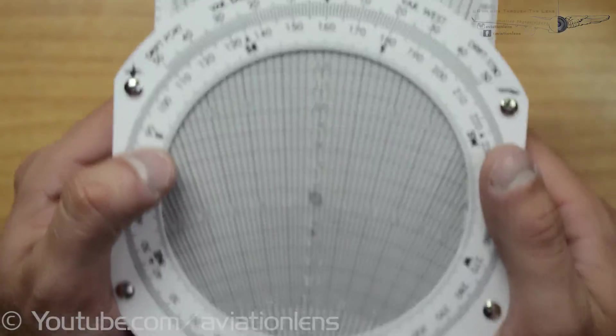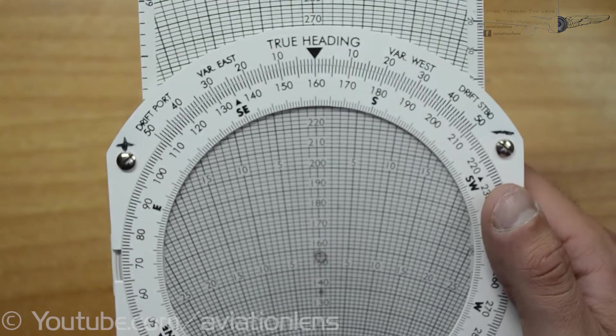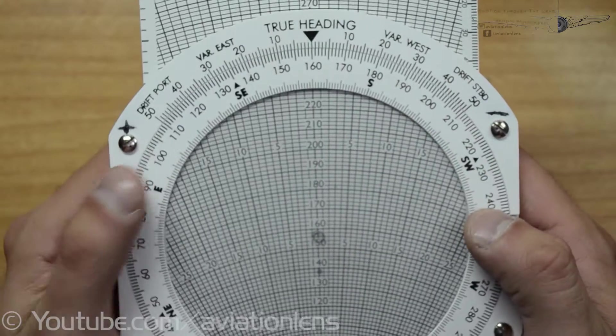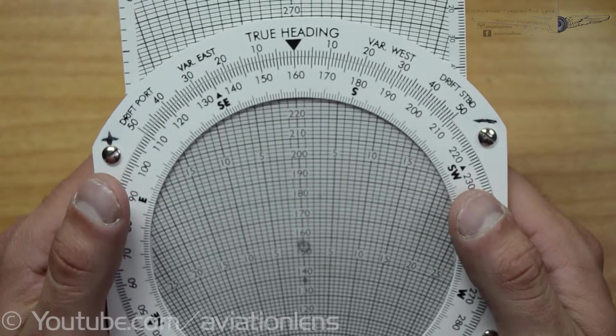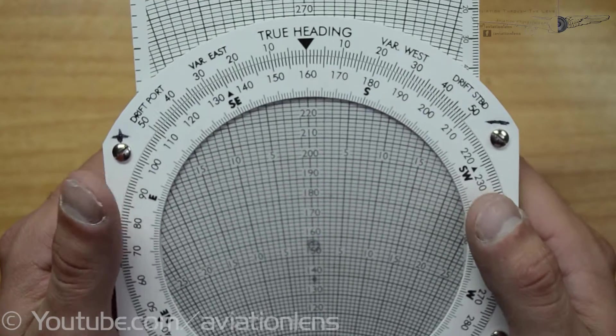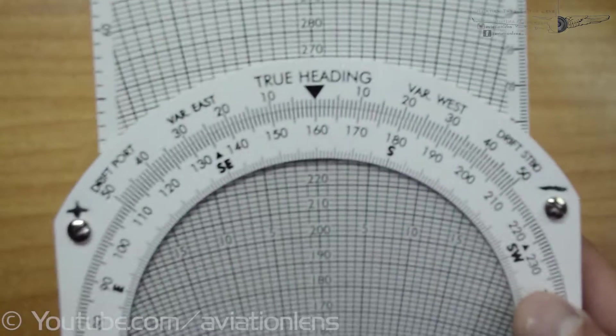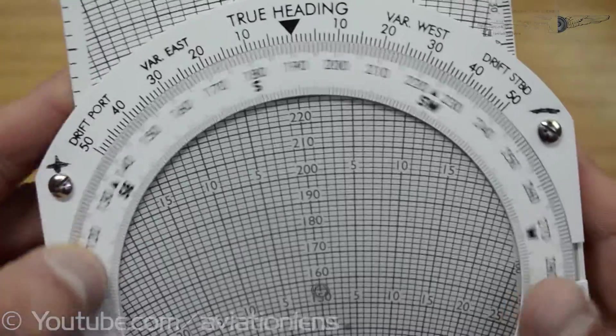So here the next step is to rotate the wheel to our track. Our track is 305 degrees. So I'm gonna set here 305.